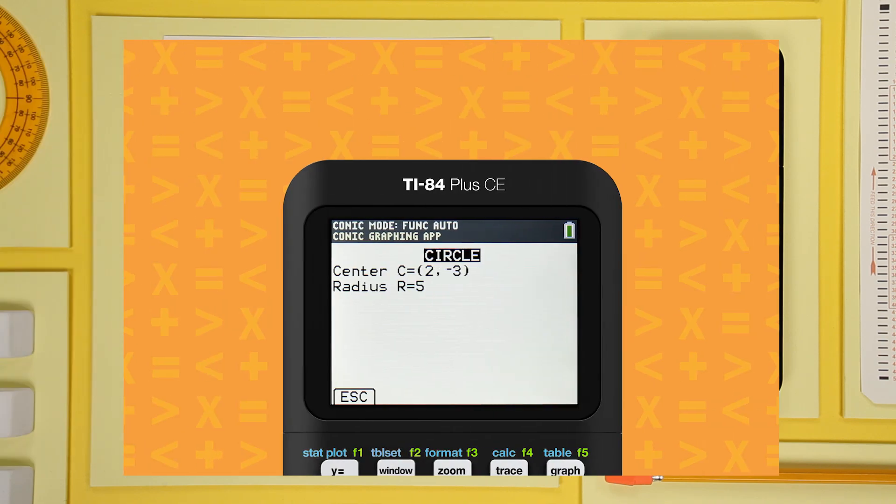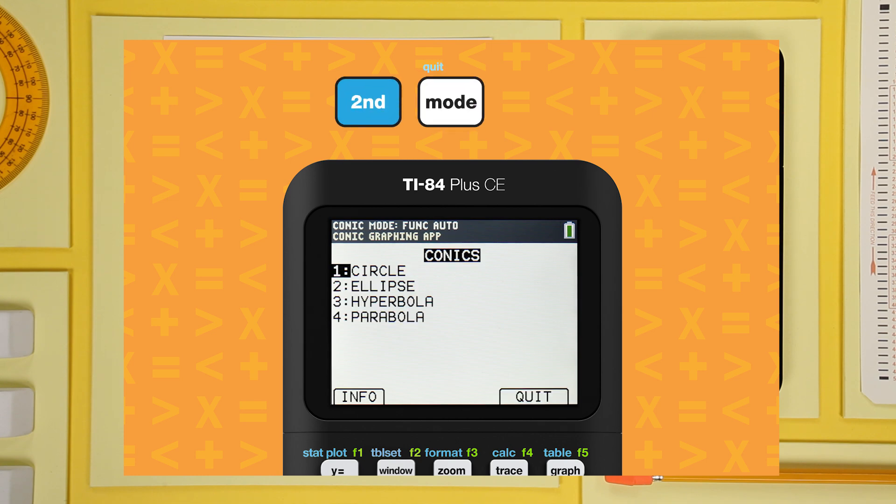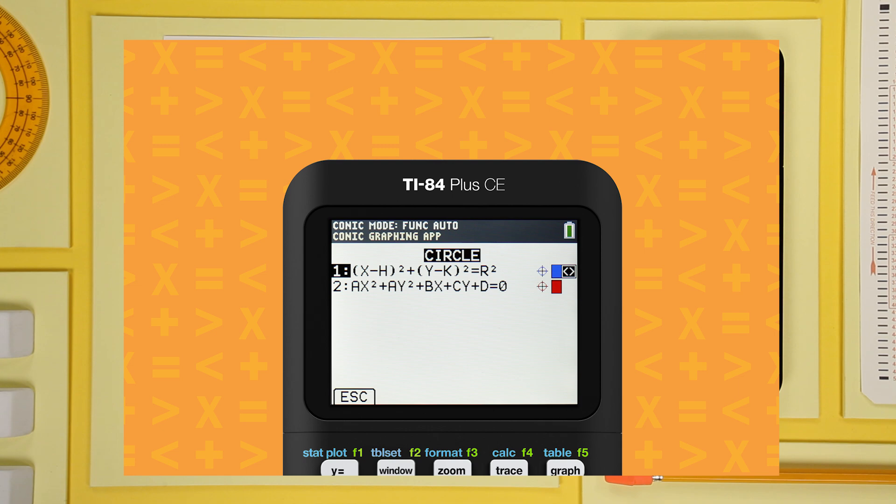Let's get back to the conics menu. Press second and quit. That's the blue command over the mode key. Choose circle and select the template to match the equation.